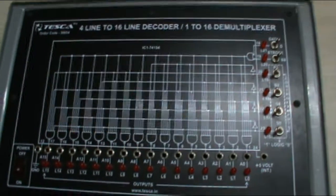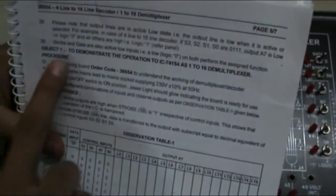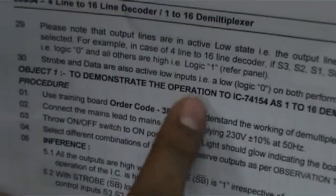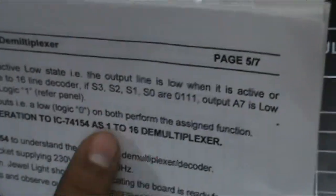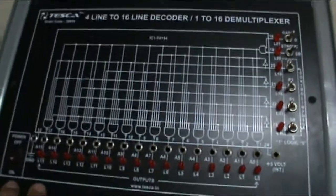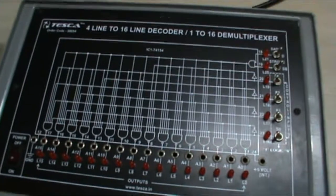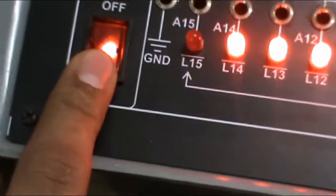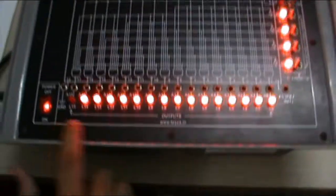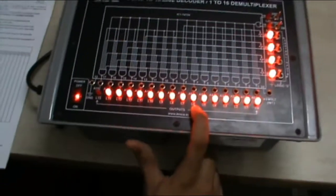Now first let me take you to the experiments. Our first objective is to demonstrate the operation of IC 74154 as 1 to 16 demultiplexer. First connect the equipment with the 230 volt AC supply. This is the main power on-off switch. As you turn it on, all the LEDs will be glowing.